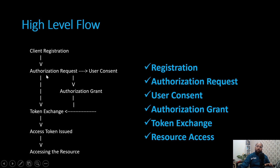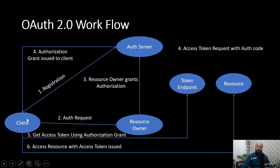So the high-level flow is: first the client registers against the authorization server, then it makes an authorization request, then user consent is given, and as a result an authorization grant is issued. With the authorization grant, we get the token. With the token, we can access the resources. From another diagram: the client is a third-party application, the authorization server is the OAuth server. The client registers first — as a result, a client ID is issued. The client makes a request to the authorization server; the resource owner grants the authorization, an authorization code is issued, and with the authorization code we call the token endpoint to get the access token. With the access token, we can access the resources on the resource server.